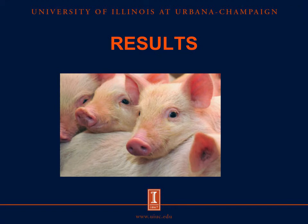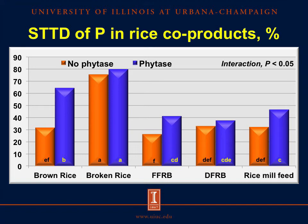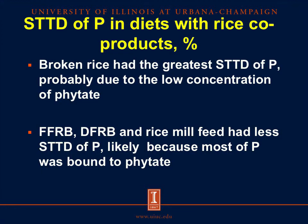Moving on to the results, the graphic shows the STTD of phosphorus in rice coproducts as a percentage. The orange bar represents the STTD of phosphorus without phytase, and the blue bar represents the STTD with phytase. We can see that the STTD of phosphorus was greater in broken rice than in other rice coproducts, whereas the STTD of phosphorus was around 30% in the other rice coproducts. However, when phytase was added to brown rice, full-fat rice bran, and rice mill feed, the STTD of phosphorus increased around 10%. Among the rice coproducts, broken rice had the greatest STTD, probably due to the low concentration of phytate compared with the other ingredients, because the aleurone layer was removed.